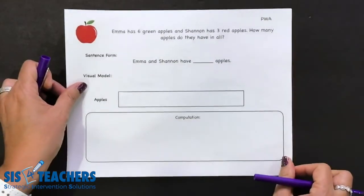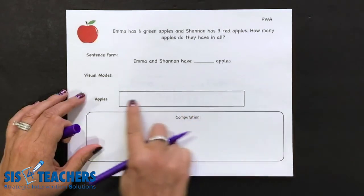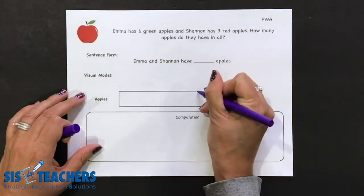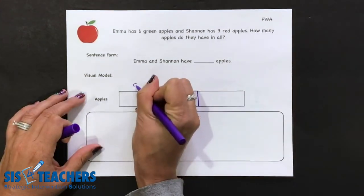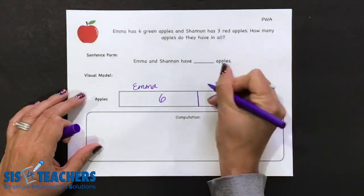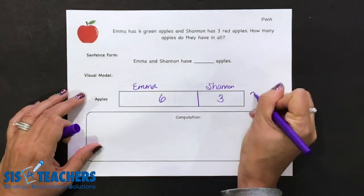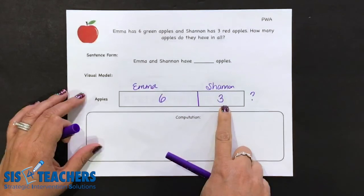If I wanted to do this same thing in a non-proportional model, I'd have to decide on this unit bar is six larger or three. Well, we know that six is larger. So I'm going to leave a little more space for Emma's apples and put Emma at the top. And then on this section, I'm going to put the three to show that belongs to Shannon. And at the end, I'm going to put the question mark.